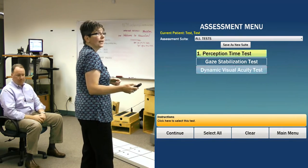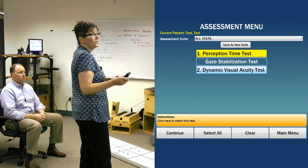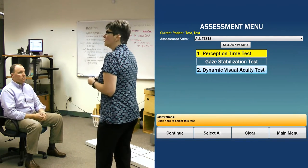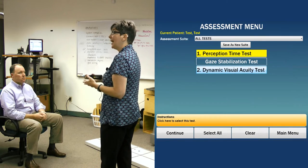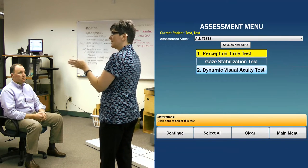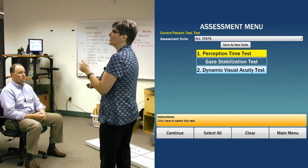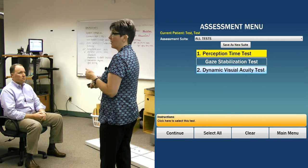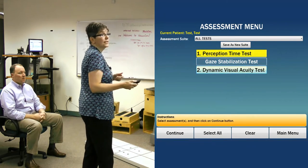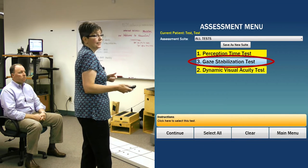I like to do dynamic visual acuity second because it's an easier test for both the patient and the operator. In dynamic visual acuity, the head velocity stays constant throughout the whole test. Then the third one we're going to do is the gaze stabilization test.